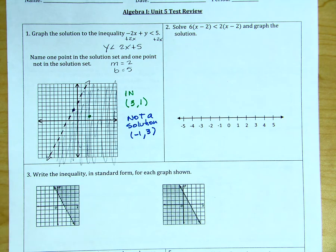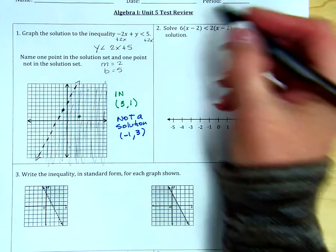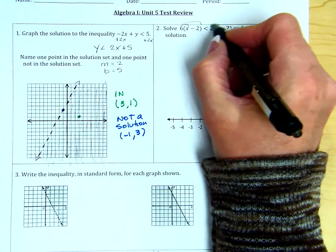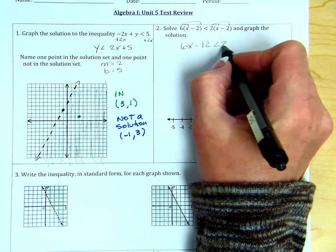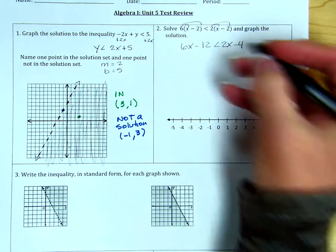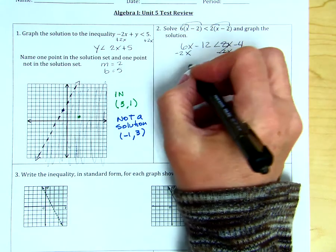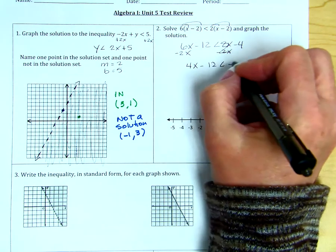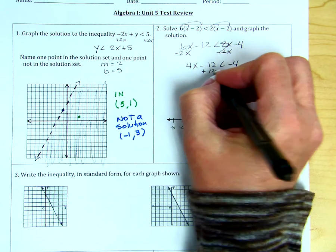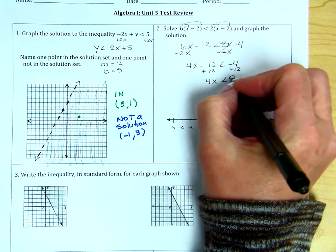For number 2, we need to solve for x and then graph our solution. So we get 6x minus 12 is less than 2x minus 4. We have variables on both sides, so I'm going to eliminate the smaller of the two. So I end up with 4x minus 12 is less than negative 4. Add 12 to both sides, so we get 4x is less than 8.